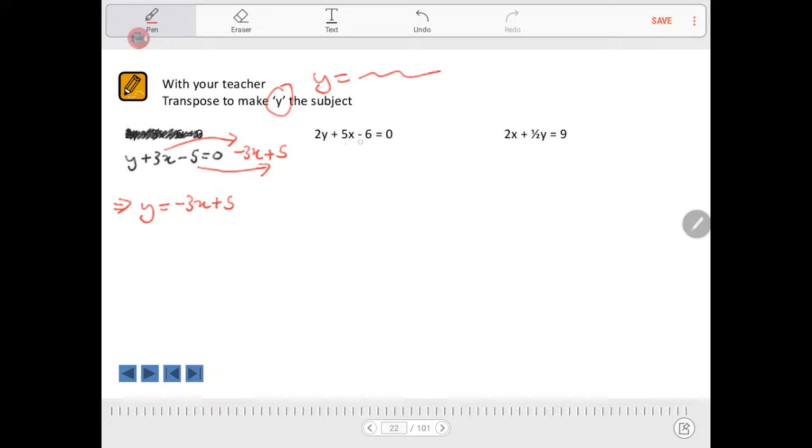We have this 5x and a negative 6. So this 5x can go over and become a negative 5x. And this negative 6 will go over and become a plus 6. So the net result of this is that we're left with 2y equals negative 5x plus 6.